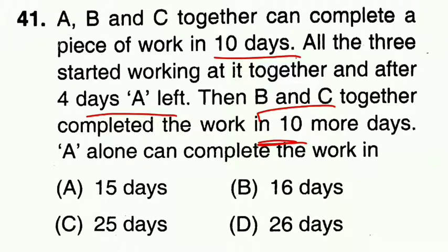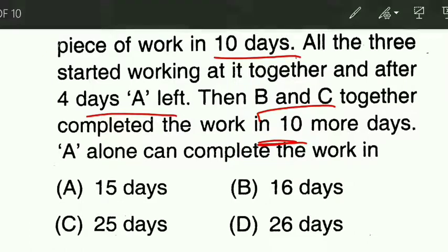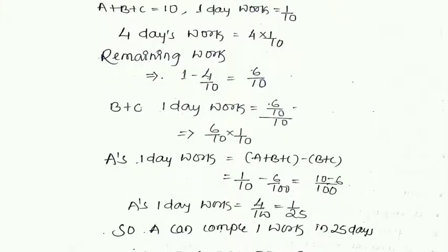This work, 3 people have completed in 10 days. All three started together; after 4 days A left, and the remaining work B and C completed in 10 more days. So we will solve this. A plus B plus C together complete the work in 10 days, meaning in one day they do 1/10 of the work.